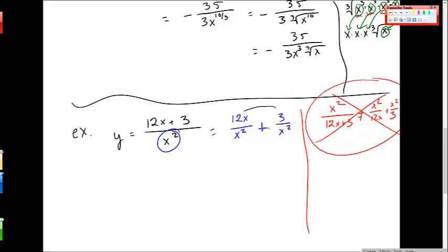So I have something like this, and then I can simplify. This is 12x over x squared is 12 over x plus 3 over x squared. These also turn into x to the minus 1 plus 3x to the minus 2.